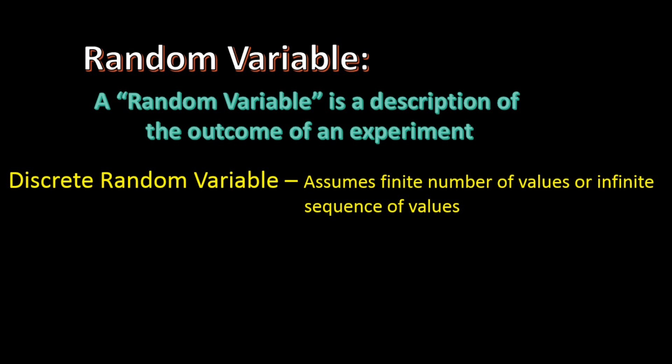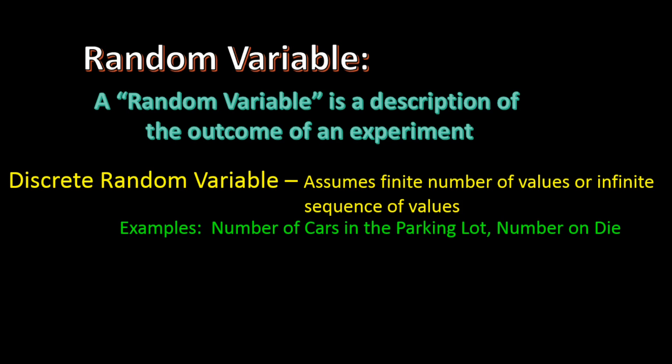A discrete random variable is a variable that takes on a finite number of values or an infinite sequence of numbers with nothing in between. For example, we can look at how many cars are in the parking lot and get 1 or 2 cars, but nothing in between. If we roll a die, we can either get a 1, 2, 3, 4, or 5, and again, nothing in between.